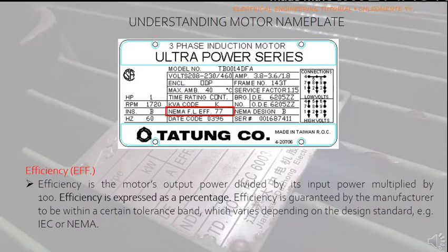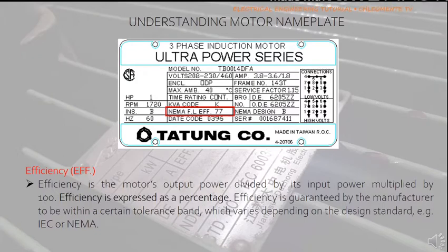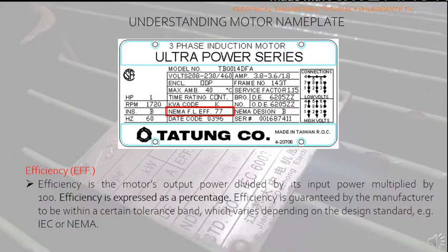Efficiency, denoted by EFF, is the motor's output power divided by its input power multiplied by 100, expressed as a percentage. In this example, the efficiency is 77%. This data is used to calculate the full load current when the nameplate FLA is not available: FLA = (1 HP × 746) / (√3 × 460 V × 0.77 × 0.75) = 1.8 amperes, which matches the nameplate value. Efficiency is also used to determine the input power needed to provide the rated HP output: 1 HP / 0.77 = approximately 1.3 HP input.